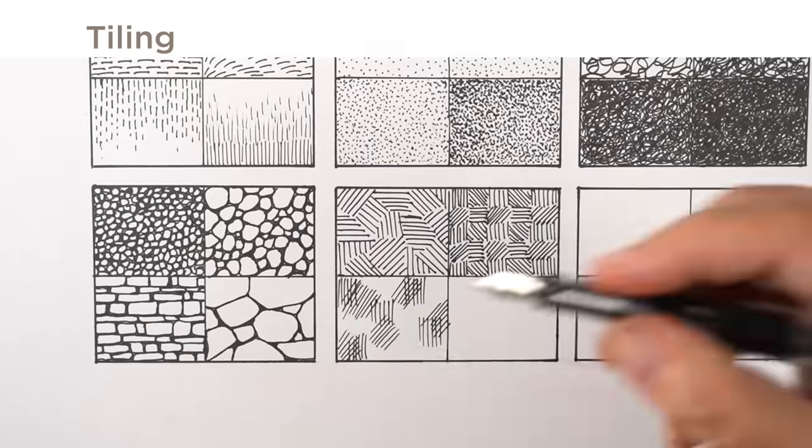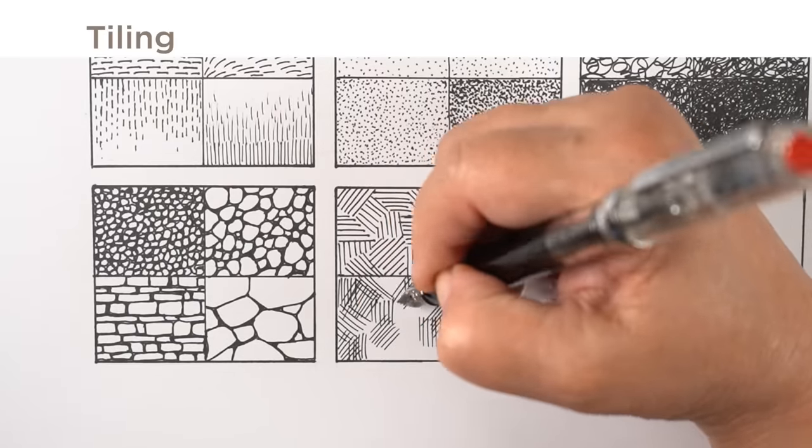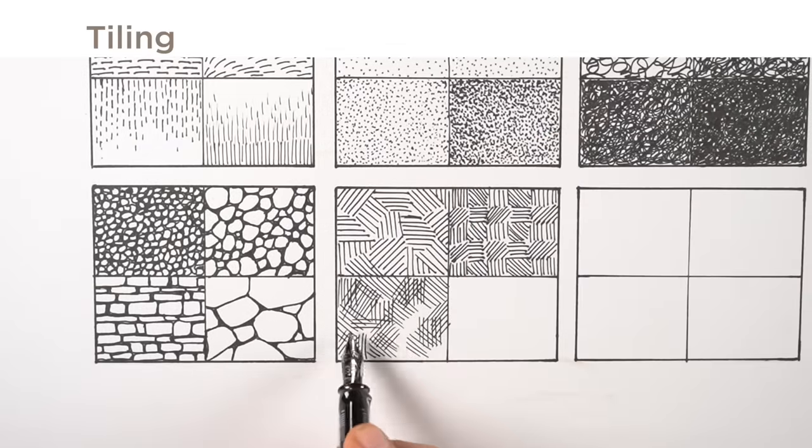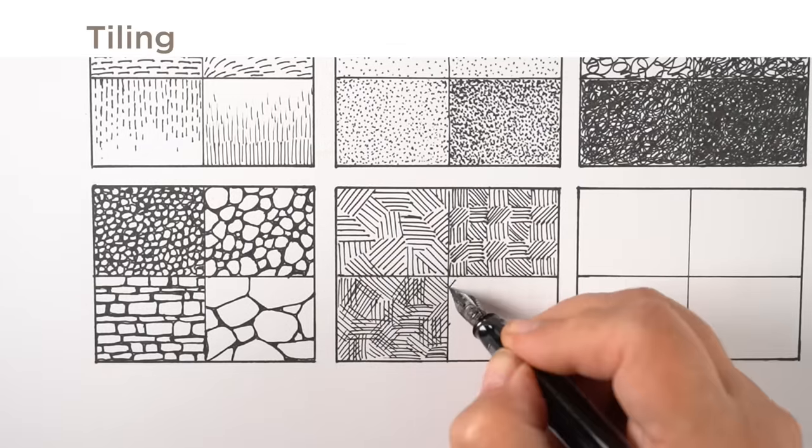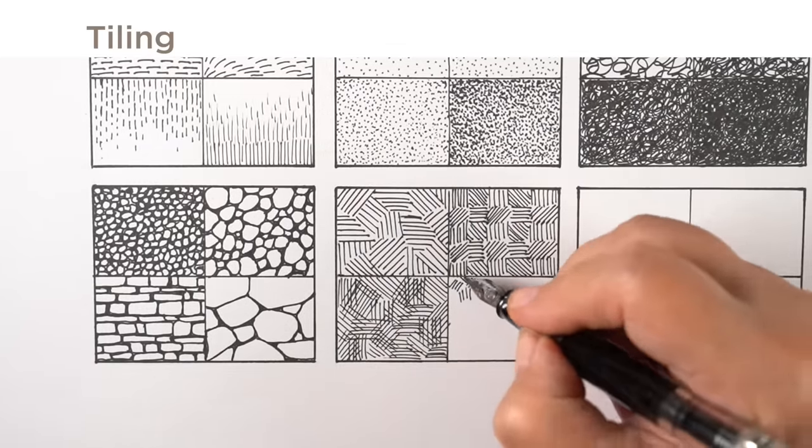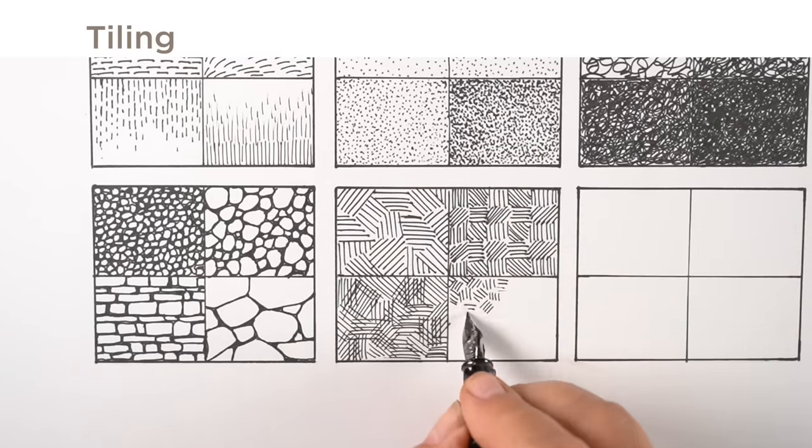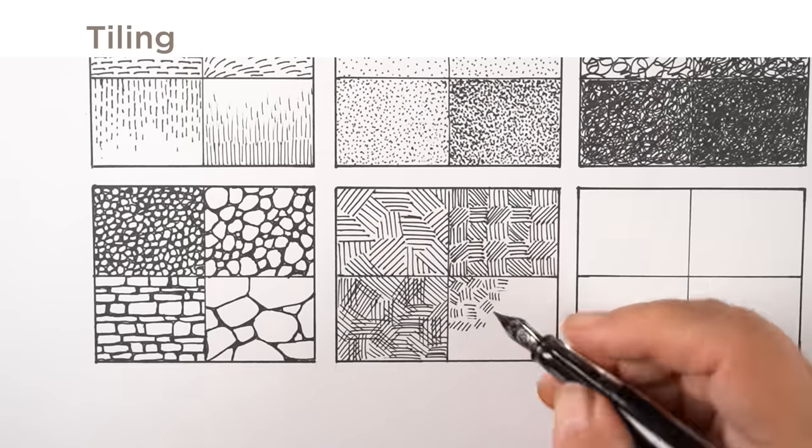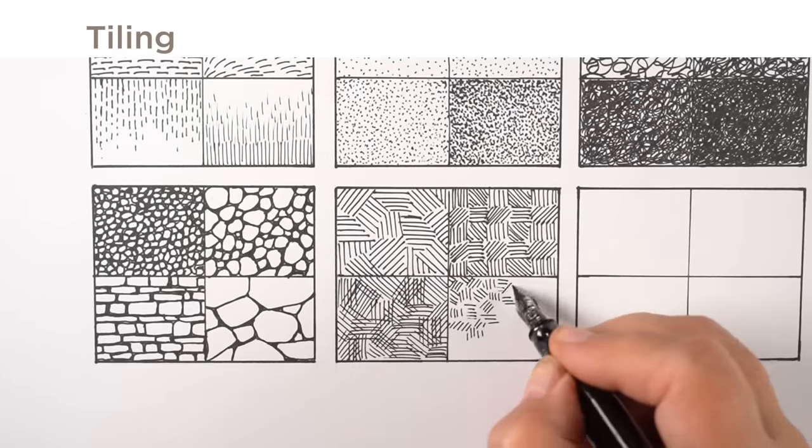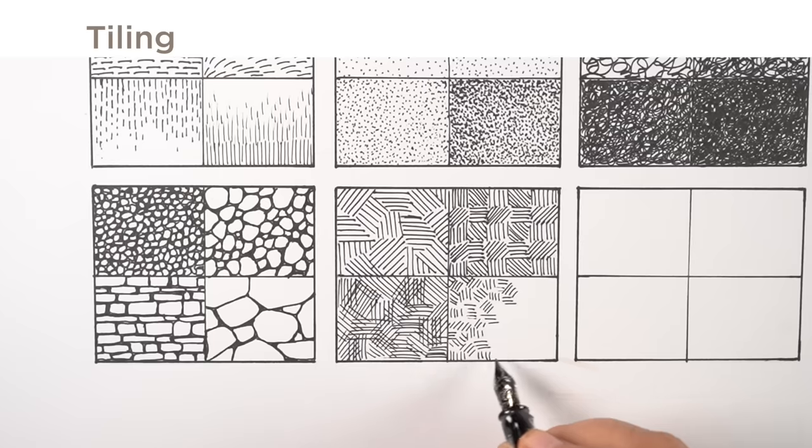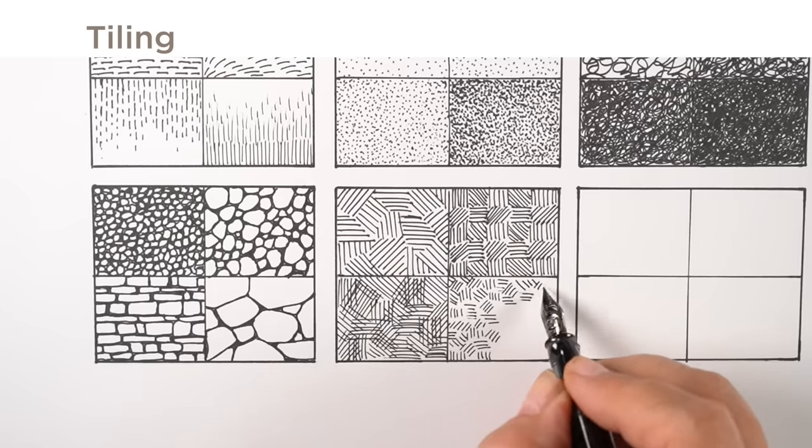And then you can get very random with it as well. You can do all different directions with your hatching in order to make a tiled pattern, and you can do that with any kind of pattern that you're using the tiling technique for. Here I'm using very tiny tiny tiling, little bits of hatching, and then the more air you leave in between it, the lighter overall it's going to be.